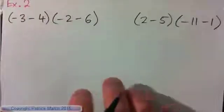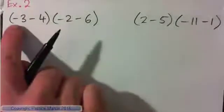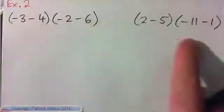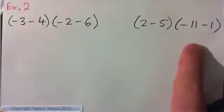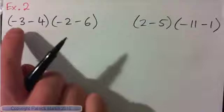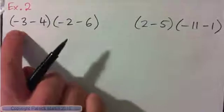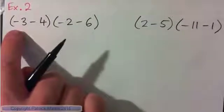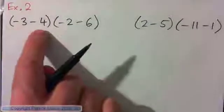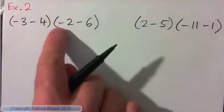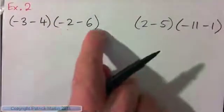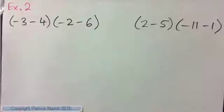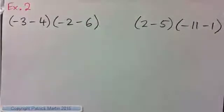On to example two. I'll do the first one and then you can do the next one. We've got negative three minus four, times negative two minus six. Write it down.